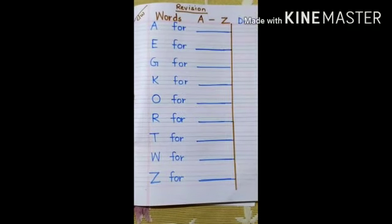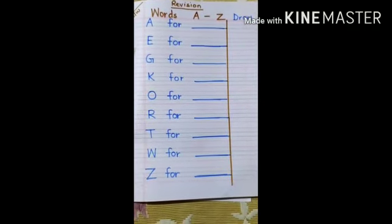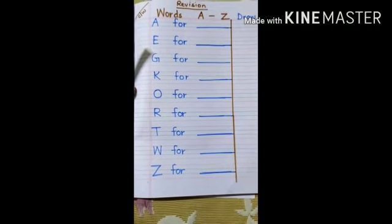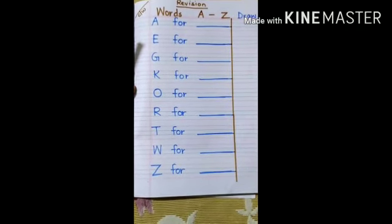Now children, take out your exercise copy, that is your English CW copy. So children, we are going to do the revision work of words. Words from A to Z.